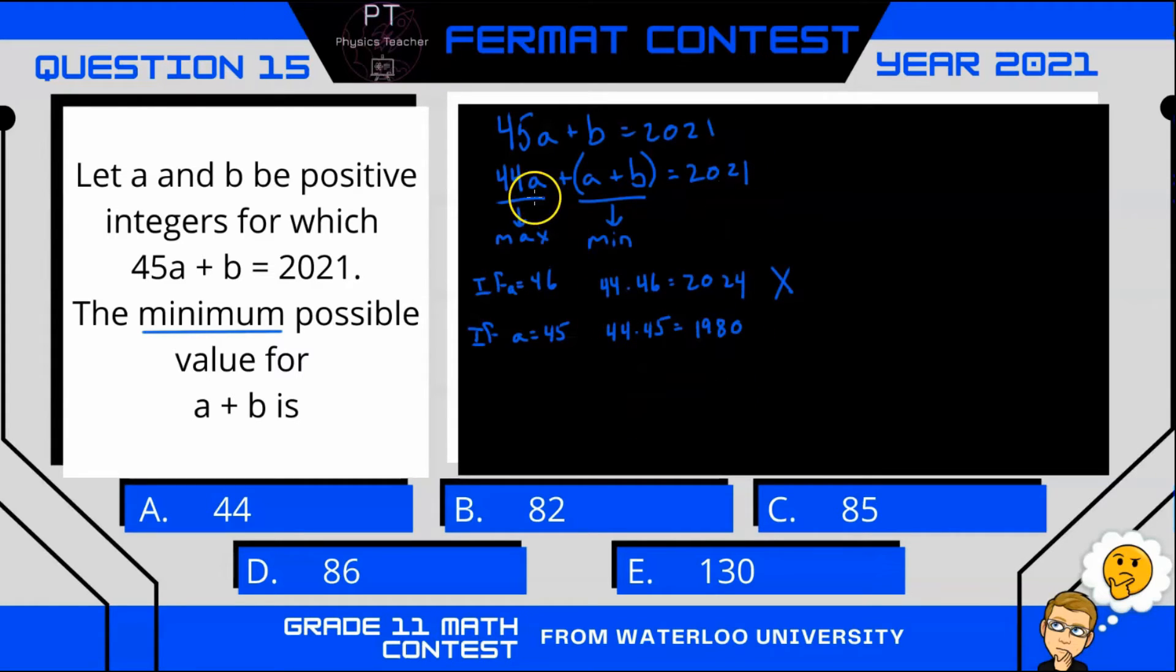So here I have 44 times a, which is 1980, plus a + b equals 2021. Now if I bring 1980 to the other side, I end up with a + b equals 2021 minus 1980, which is 41.